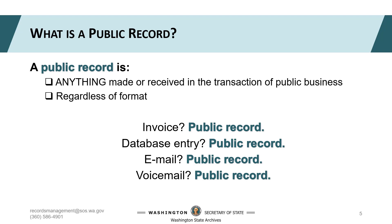The Revised Code of Washington, or RCW, is the legal framework that governs the work we do as employees of state and local government agencies. Chapter 40.14 of the RCW tells you how to manage, destroy, or transfer public records. It also provides a straightforward definition: public records are anything made or received in the transaction of public business. Public records aren't just text documents — they can be audio recordings, social media posts, PowerPoint slide decks, emails, and even chat logs.